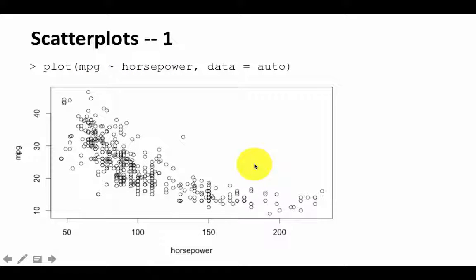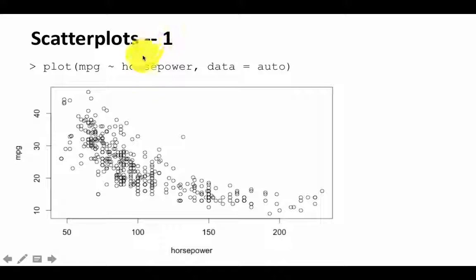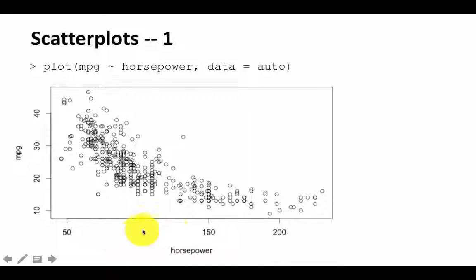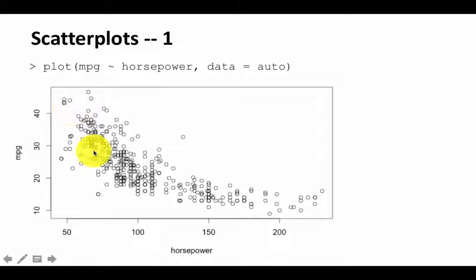And it looks like this. So horsepower is on the x-axis. Remember, this says y as a function of x. So what is on the right hand side is the x-axis, and the left hand side is the y-axis. Therefore, you get MPG on the y-axis and horsepower on the x-axis. And for every value in the data set, it is showing you a point.